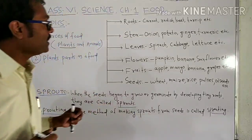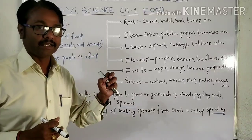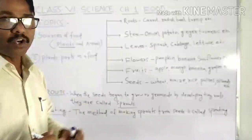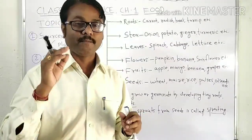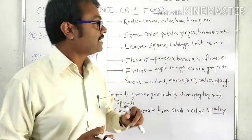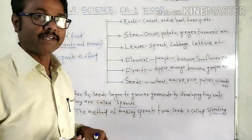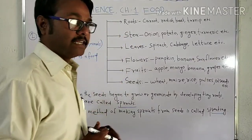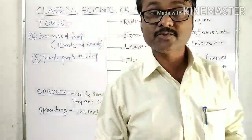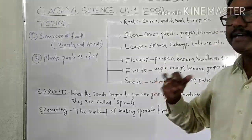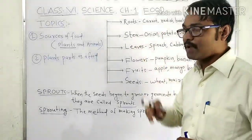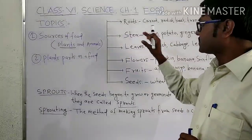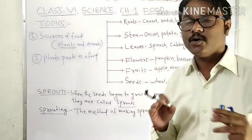Plants are an important food source for us, and almost all parts of the plant are taken as food in some special types of plants. These parts are: root, stem, leaves, flower, fruits, and seeds. We will go into details about which plant's root part is important, which plant's leaves part is important, and so on.